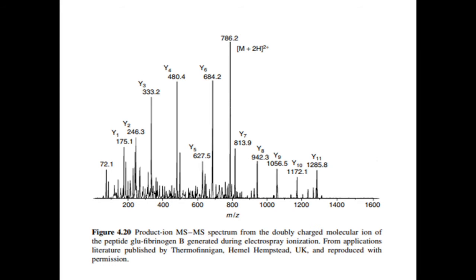This spectrum enables the full sequence of the peptide to be confirmed. Were the precursor to have more charges, the charge state of the product ions and thus the relationship between them would be less obvious and require more detailed interpretation. The greater the number of charges on the precursor, the more difficult the spectrum is likely to be to interpret.